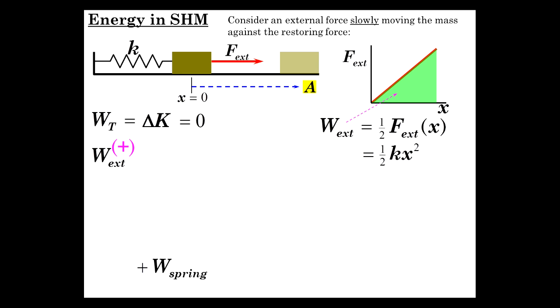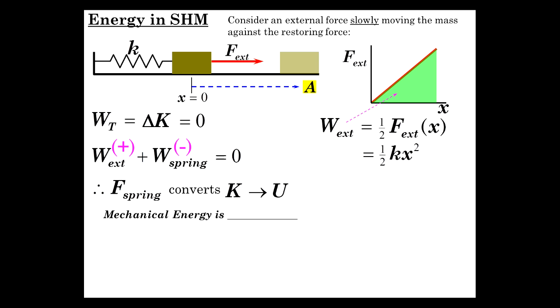So work external, which is positive, plus work done by the spring, which is negative because the spring is pulling back on the mass while it's being moved to the right, is zero. The force of the spring is an elastic force, a conservative force. Therefore, it's going to convert kinetic into potential energy.